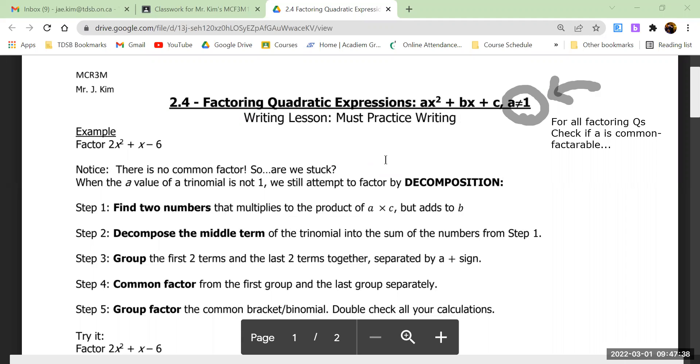You want to avoid this situation as much as possible. If you can factor out the a, do it because it makes your life easy. But if you can't, this is the only way you can go about it.